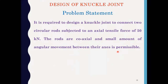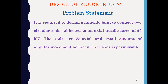This is the problem statement. It is required to design a knuckle joint to connect two circular rods subjected to an axial tensile force of 50 kN. The rods are coaxial and a small amount of angular movement between their axes is permissible. We have to design the knuckle joint for 50 kN load, which is 50 × 10³ N.